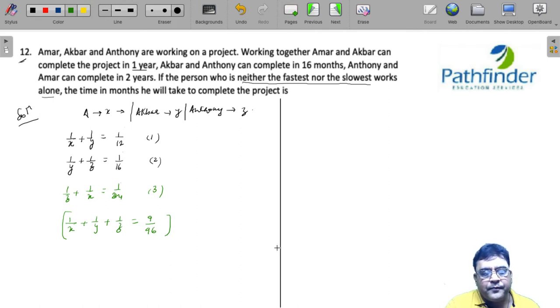Now we have to find out who is the fastest. So obviously, you can individually find out the times taken by Amar, Akbar and Anthony. So if I want to find out Z, all I will need to do is subtract from equation 4, equation 1.